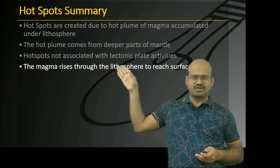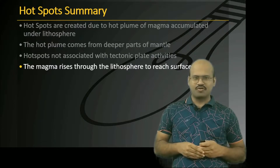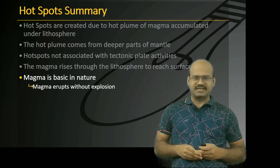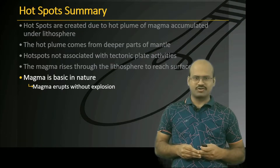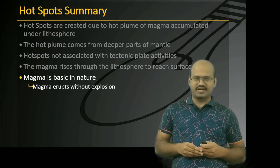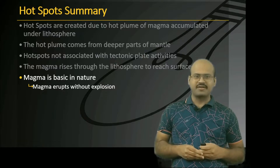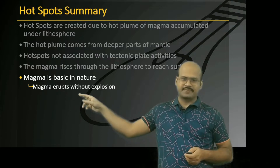The magma rises through the lithosphere to reach the surface — the upper lithosphere is melted by the plume, and cracks develop in the overlying rock structure due to bulging. The magma is basic in nature because our mantle is sima in its characteristic, and hotspots are generally formed in weaker zones or under oceanic zones, so the magma does not travel much through continental crust. Magma erupts without explosion because it is not viscous.